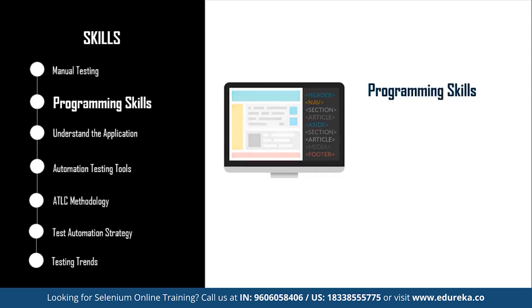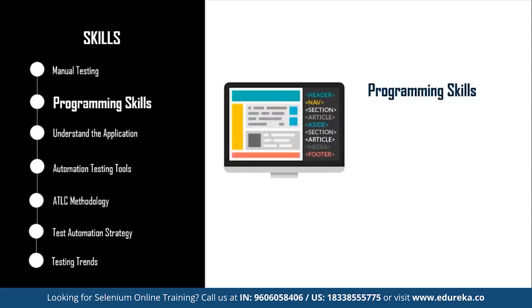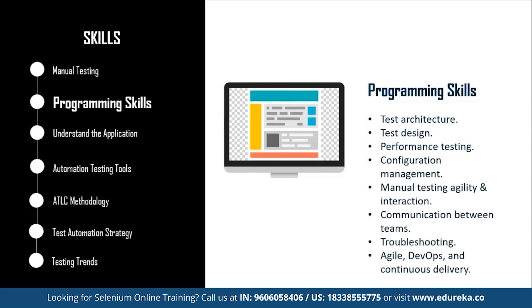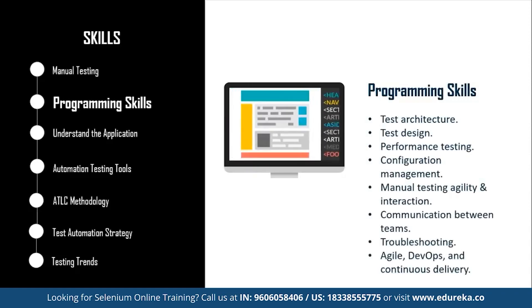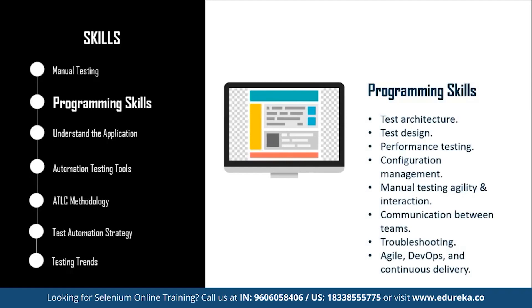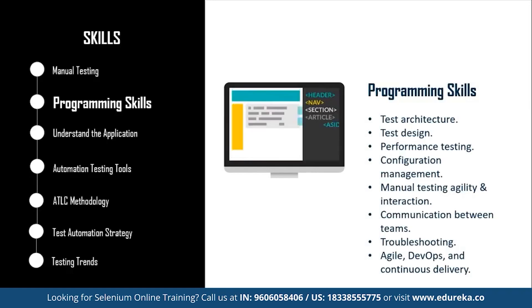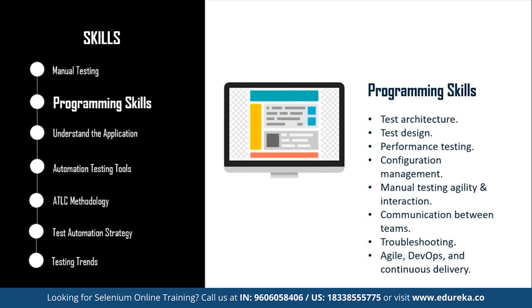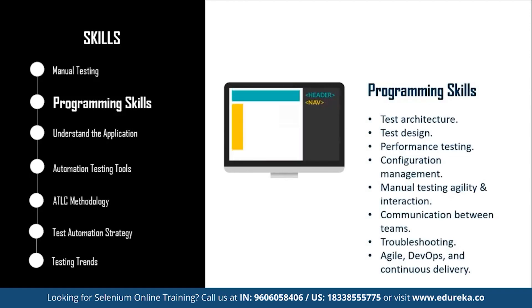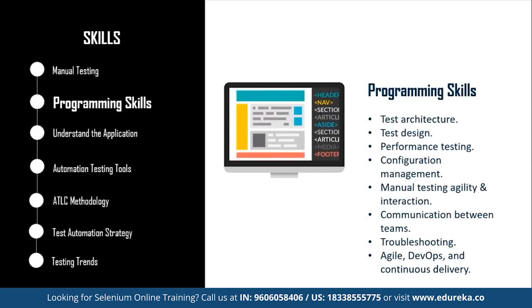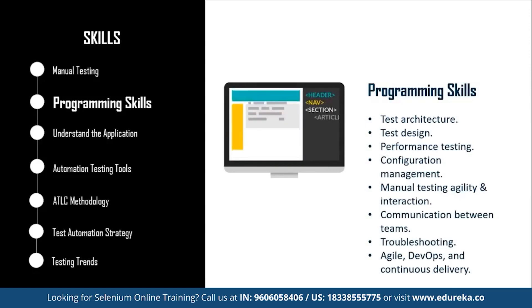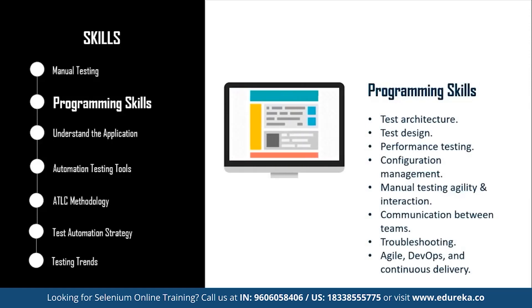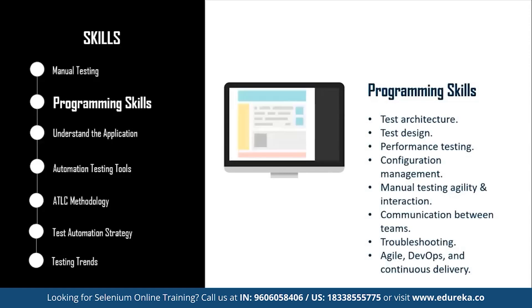There are also technical skills a manual tester should master to become a brilliant automation testing engineer, such as test architecture, test design, performance testing, configuration management, manual testing agility, interaction and communication between teams, troubleshooting, and Agile DevOps and continuous delivery. The combination of all these skills can help you transition to automated testing easily and smoothly.